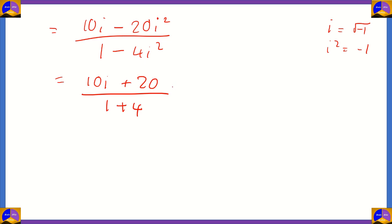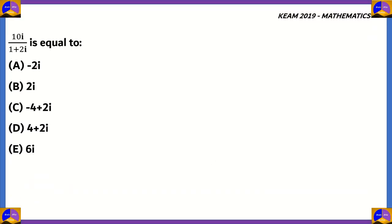That's 10i plus 20 divided by 5. 5 goes into 10 twice and 5 goes into 20 four times. So, 4 plus 2i is the correct answer for this question. And if you look at our following options, it is clear that option D is the right answer.